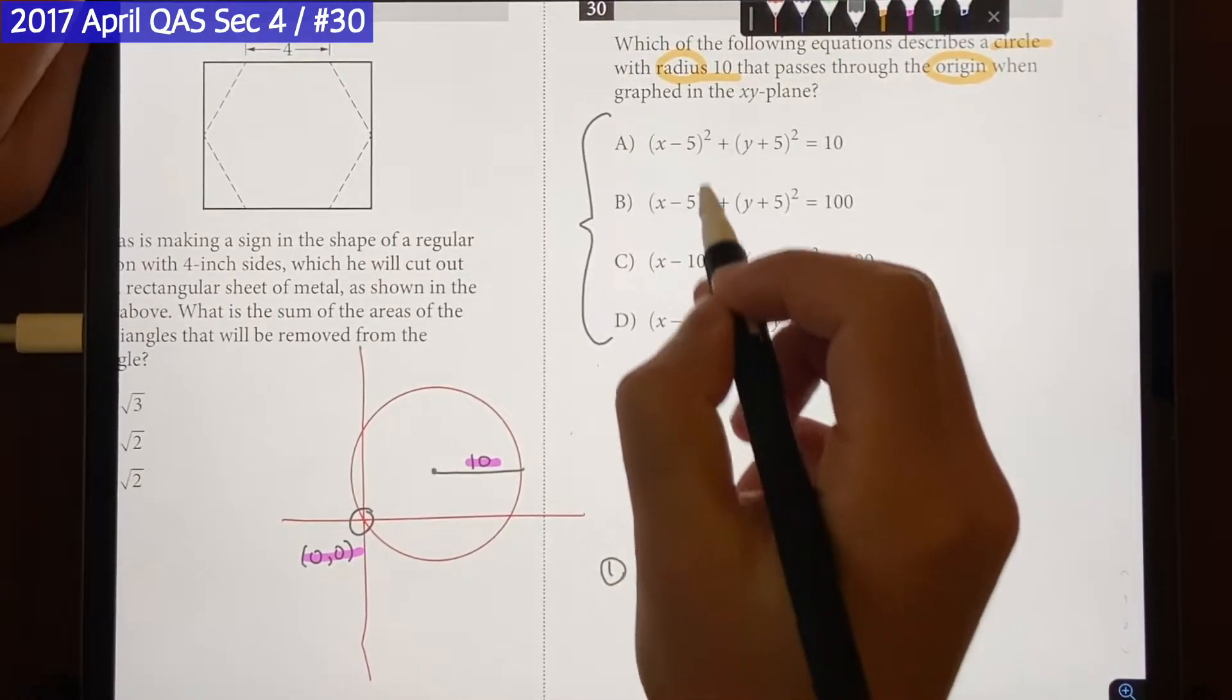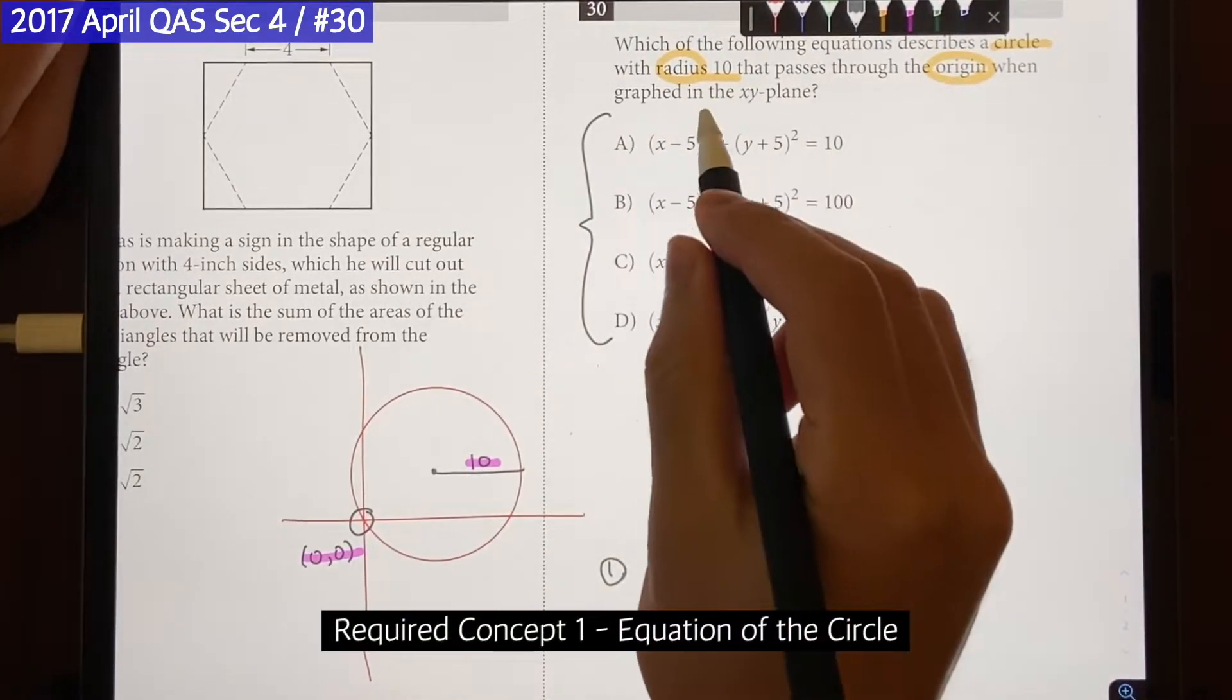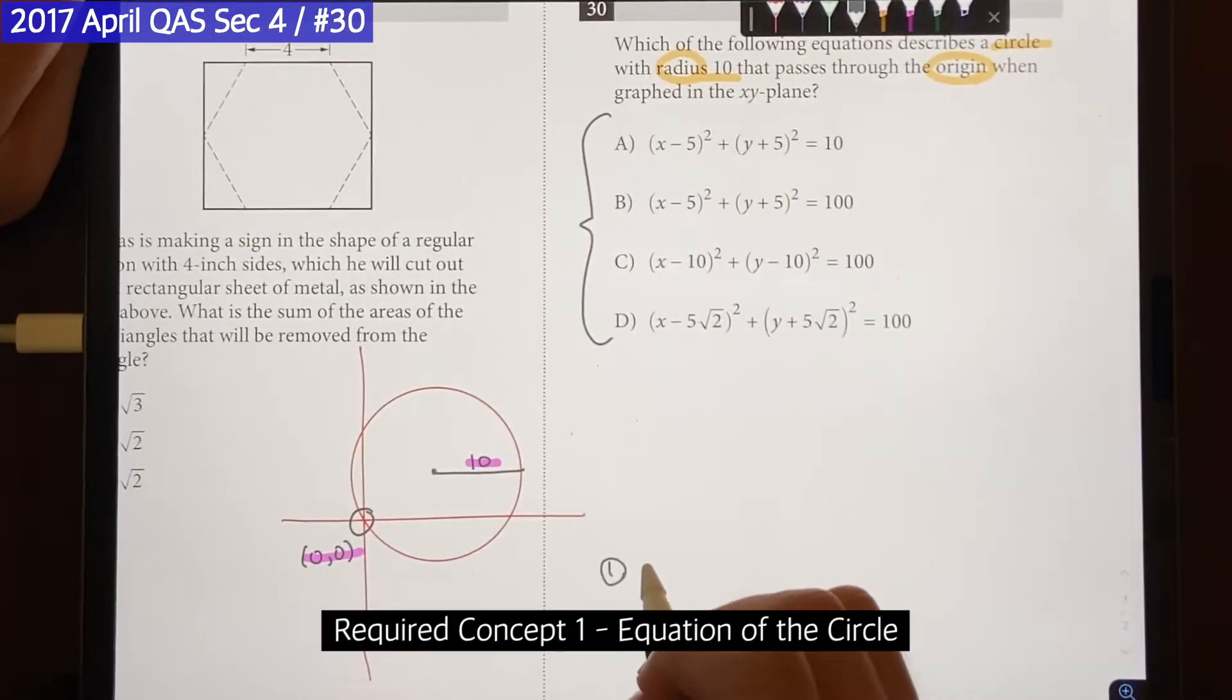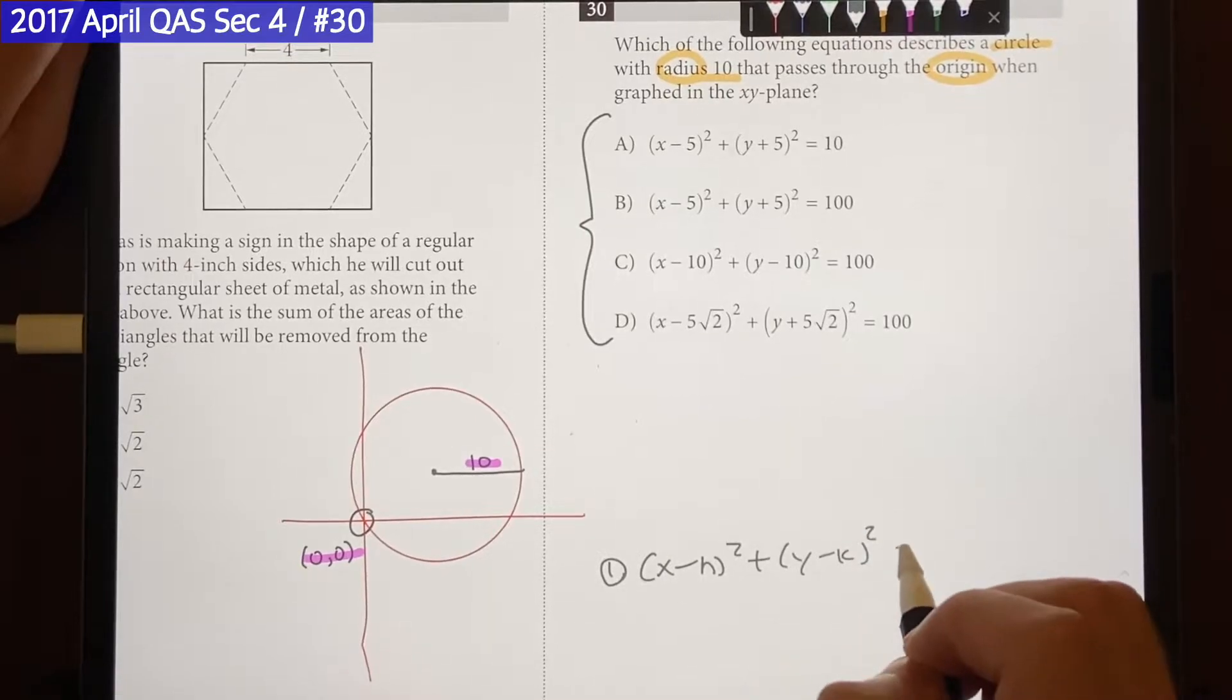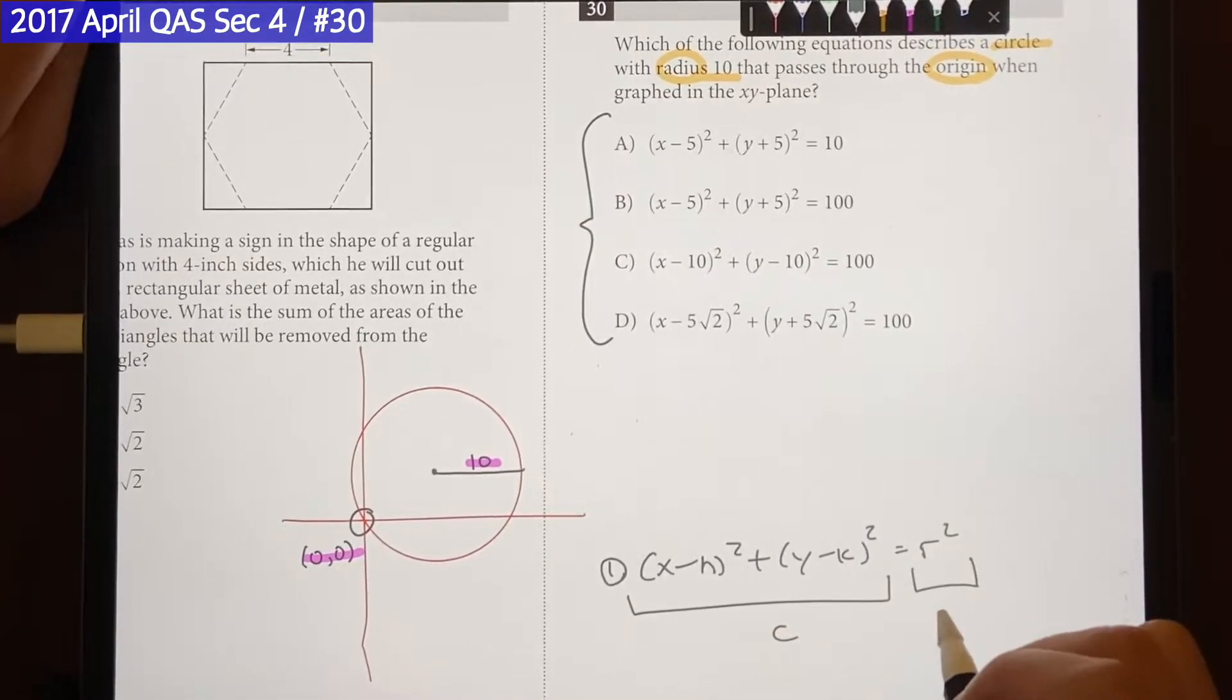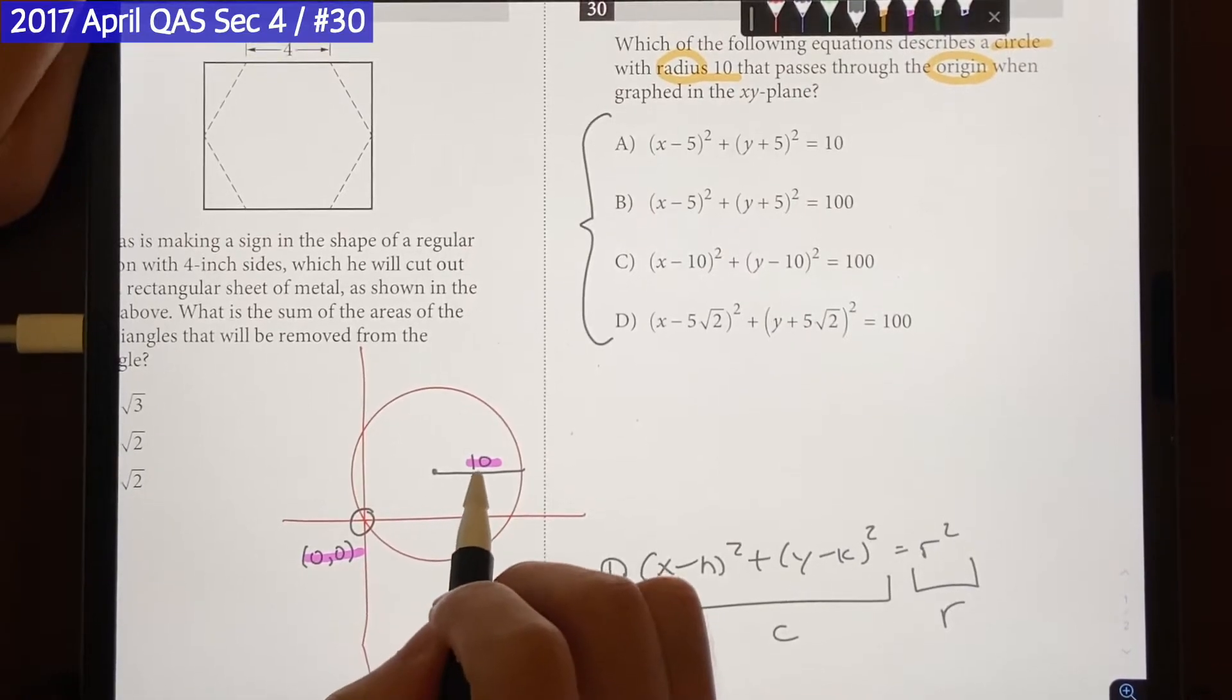So the first one is going to be the equation of the circle. Every single answer choice is in the equation of a circle form which is (x - h)^2 + (y - k)^2 = r^2 where this is the center and that's going to be the radius. And because our radius is 10, r squared should be 100 right.